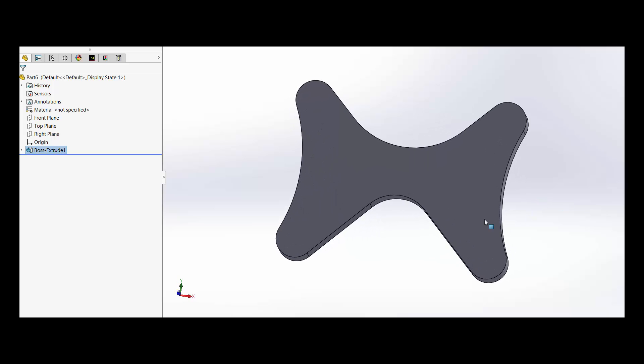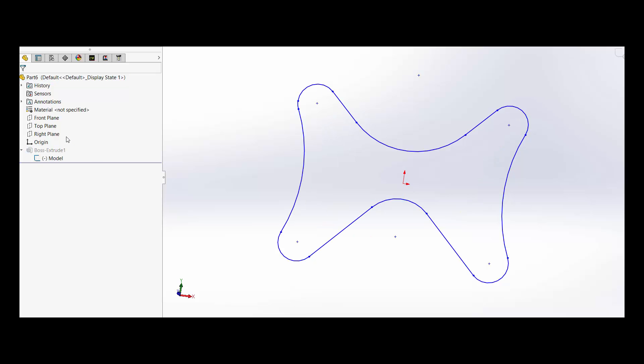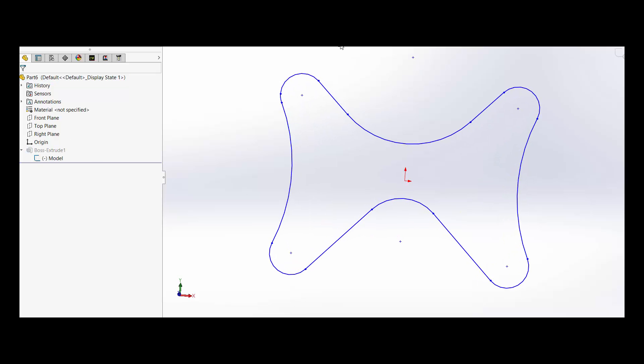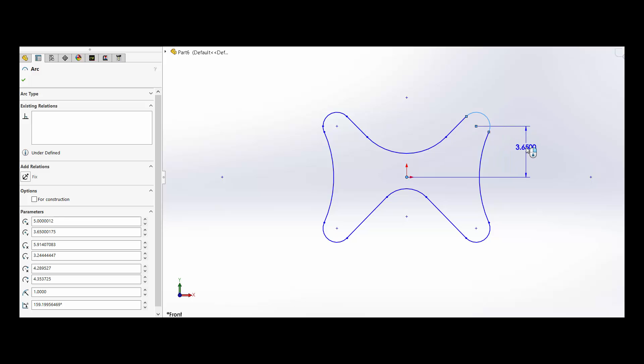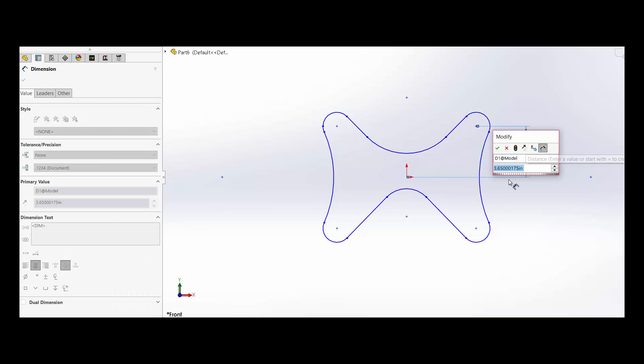Or you can simply go in here and go to smart dimensioning. Let's say from here to here, so you can see that that's been changed from 3.6 inches to 3 inches 650. You could check that out, we changed that radius.